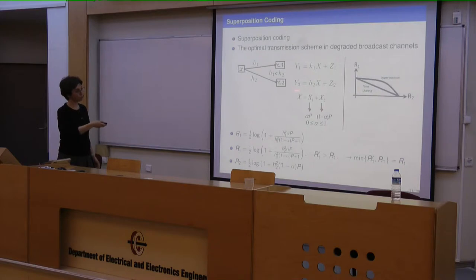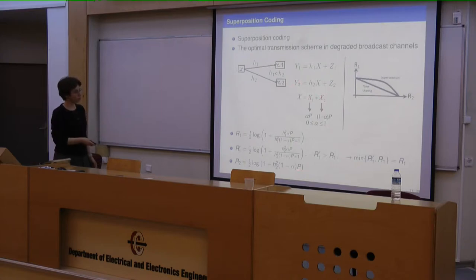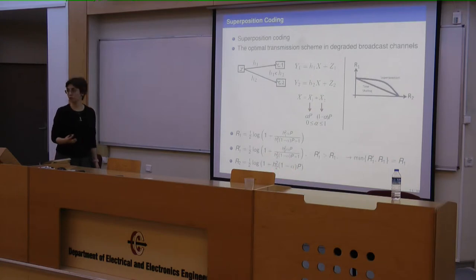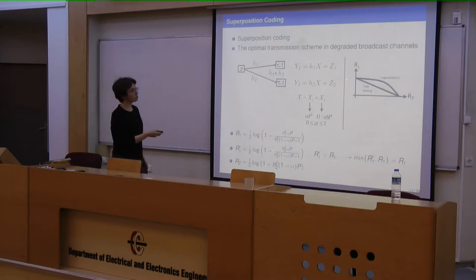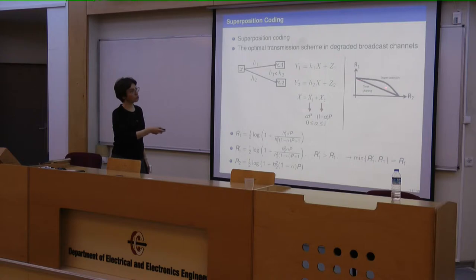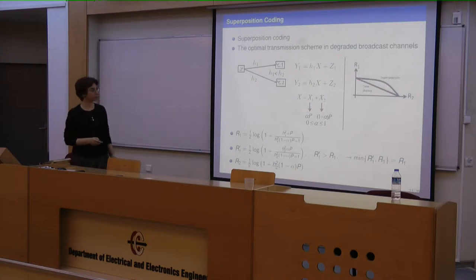The second user is the more capable one. Because it has already decoded X1 reliably, it subtracts X1 from Y2 and then decodes X2 at rate R2. Because X1 is already subtracted, there is no interference term in the denominator. The capacity region for this single antenna degraded broadcast channel, when plotted as R1 versus R2, shows that superposition coding achieves a larger rate region than time sharing.